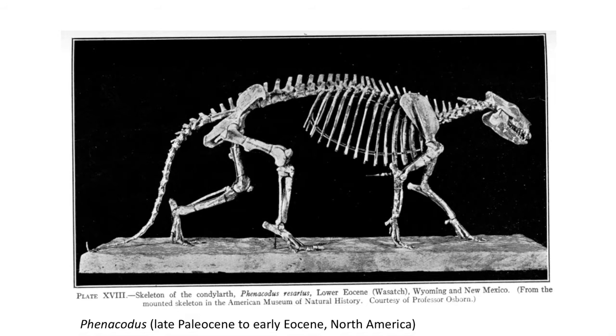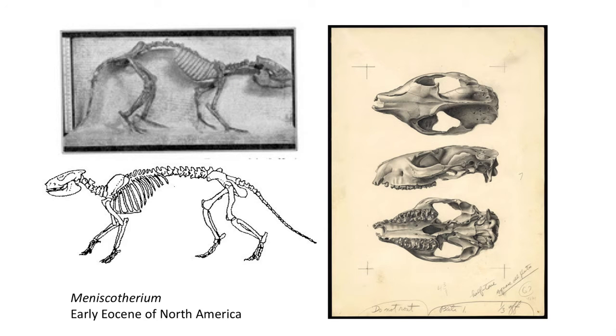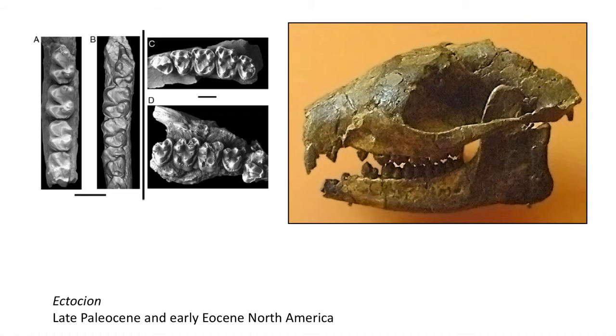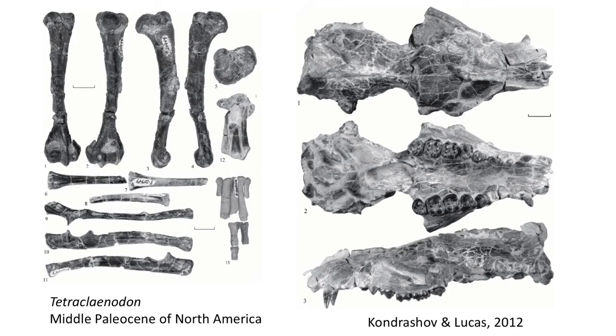There are also a couple of other common phenacodontids in North America, including Meniscotherium, which had more grinding-like teeth, and Ectacion. One of the more important fossils in our discussions of ungulate evolution is Tetraclaenodon, which had a more upright running stance and is known from the Middle Paleocene. These archaic ungulates are older than the true perissodactyls that would arise at the start of the Eocene.